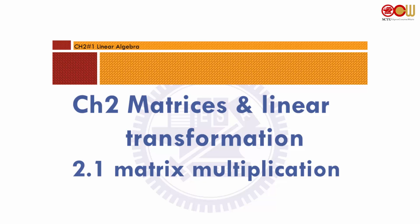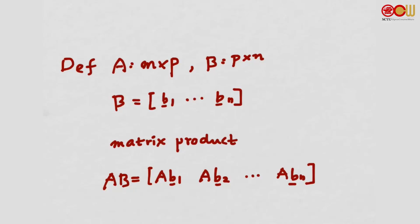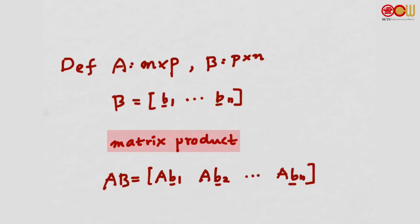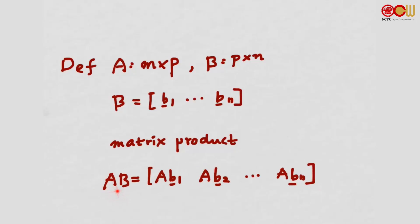Chapter 2: Matrices and Linear Transformations. Let's first talk about matrix multiplication. Suppose A is a matrix N by P and B is a matrix P by N, so B has N columns. The matrix product AB is defined as follows.